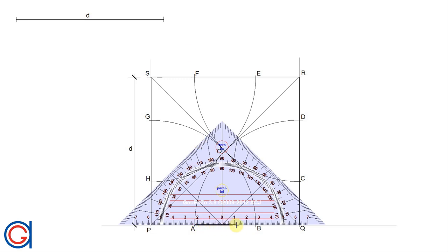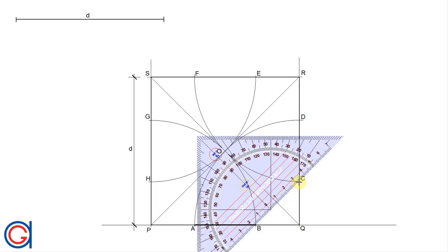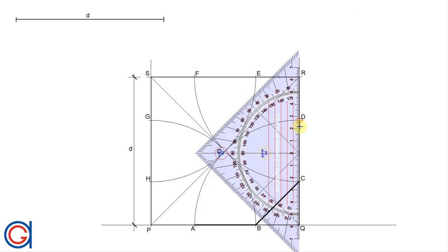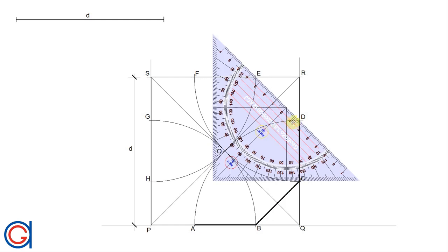And the final step is to join these eight vertices with a thicker line, from A to B, B to C, C to D, D to E.